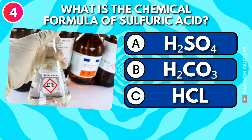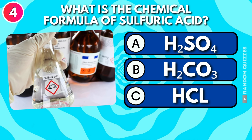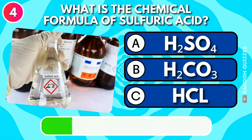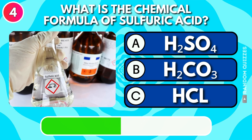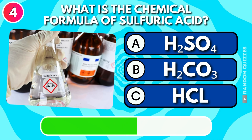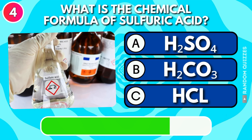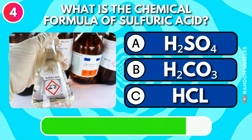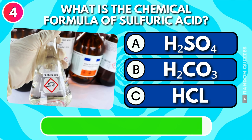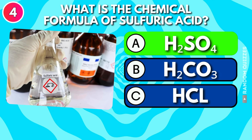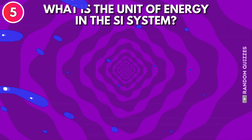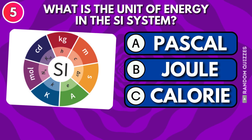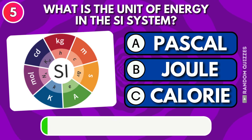What is the chemical formula of sulfuric acid: hydrogen sulfate, hydrogen carbonate, or HCl? Answer: Hydrogen sulfate.